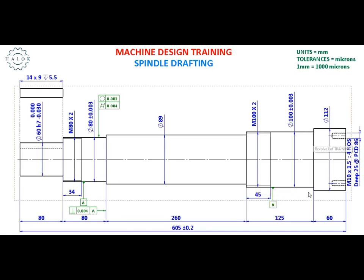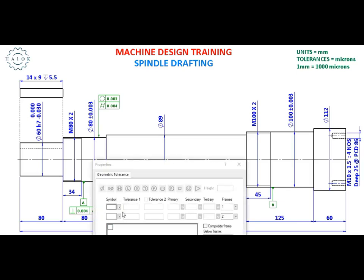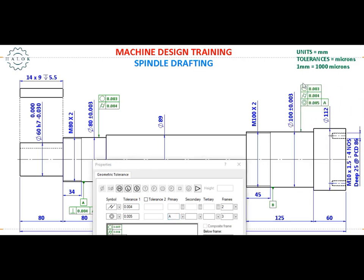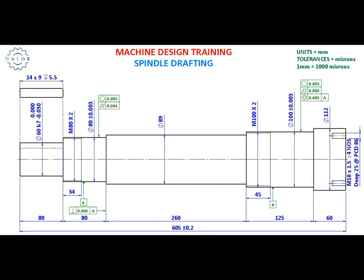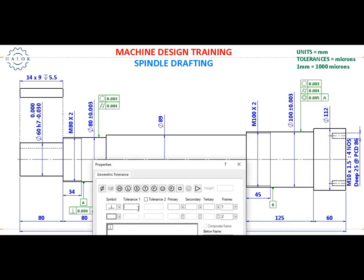Next, we apply geometrical tolerances to the second bearing-carrying region. Same as before, I am going to indicate to my manufacturer to maintain the circularity of that region to be around 3 microns and the cylindricity to be around 4 microns. Additionally, I am going to maintain the concentricity of that region to be around 5 microns with respect to datum A, since it is a must to ensure there is no eccentricity in the spindle. Coming to the step face in this region, the side face of the bearing is against this step, so I am going to indicate to the manufacturer to maintain the perpendicularity of that stepped portion to be 4 microns with respect to datum B.